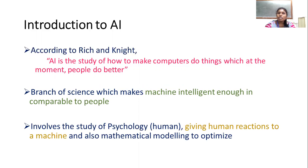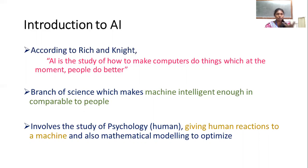It involves the study of psychology — giving human reactions to a machine — and also a mathematical model to optimize. That is the definition of Artificial Intelligence. The human response, situations and scenarios, and responses are mapped so we can transfer human reactions to a machine.